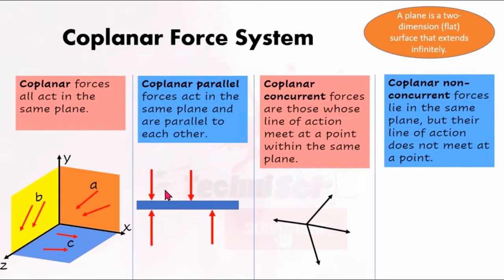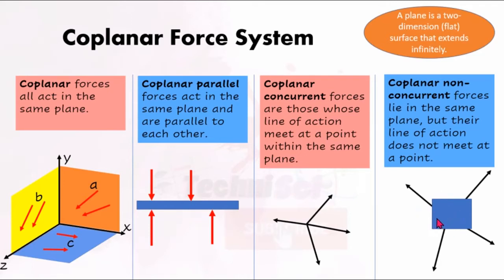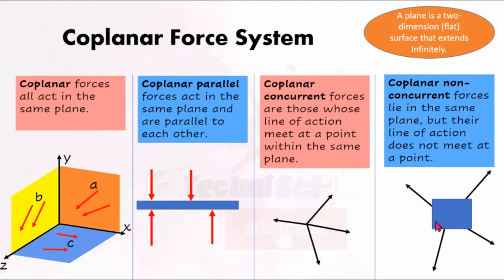The final coplanar type is coplanar non-concurrent — the opposite of concurrent. For non-concurrent forces, their lines of action do not meet at a point. Because they're coplanar, they're all in the same plane, but in this example the forces shown do not meet at a point, making this a coplanar non-concurrent force system.